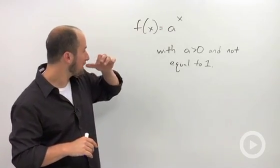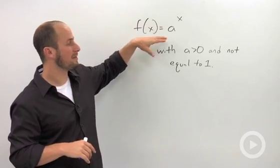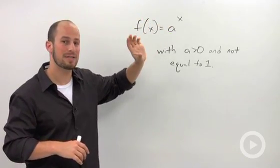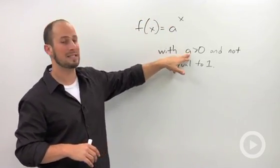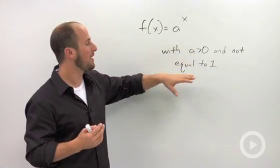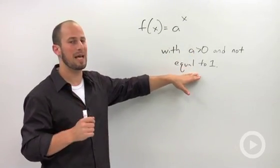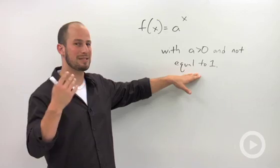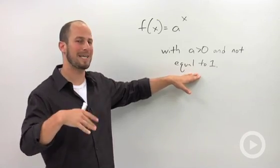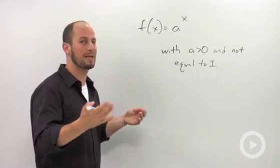An exponential or power function is anything of the form a to the x, and there's a restriction on a—it has to be greater than zero and can't be one. The reason it can't be one is if you have one to any power, it's always going to remain one, so it doesn't really make sense to have our base be one.